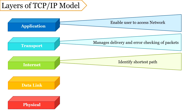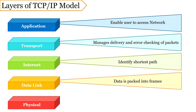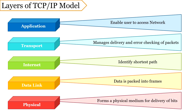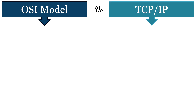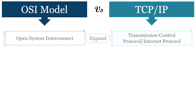Next is the internet layer, which is equivalent to the network layer — it identifies the path that a packet has to travel to reach its destination. Next is the data link layer, which encapsulates data received from the network layer into frames. And the last is the physical layer, responsible for transmitting bits over a medium and providing mechanical and electrical specifications.